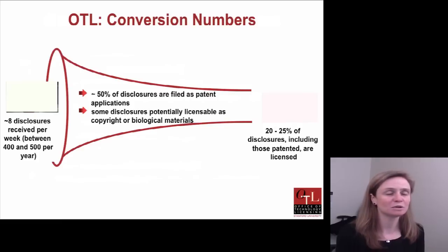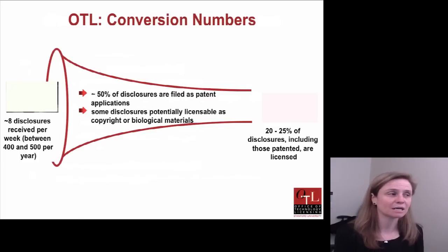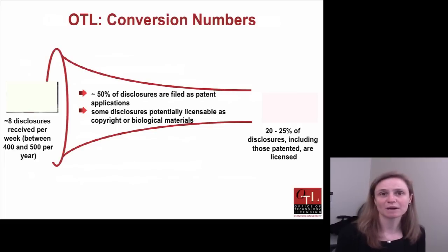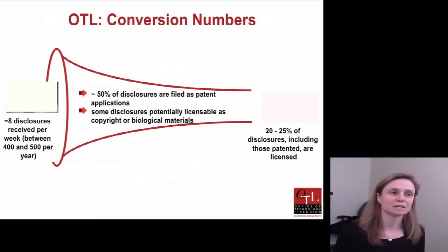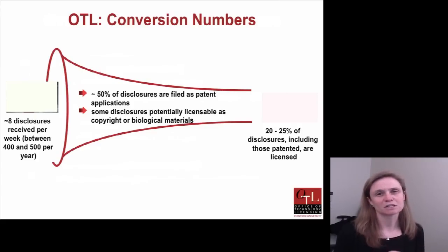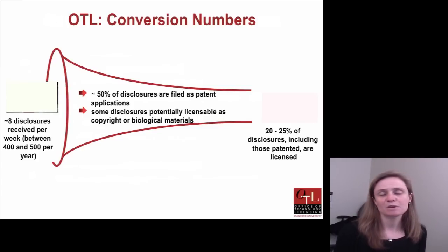We typically receive about eight new invention disclosures per week — between 400 and 500 per year. We start the patent application process on about half of those. Some we don't file as patent applications because they can be licensed as biological material or software — copyrightable works where patenting isn't necessary. For other inventions we decide not to pursue for reasons such as limited commercial potential, significant prior art, or being a very small niche improvement. At the end of the day, we license between a fifth and a quarter of the invention disclosures we receive.